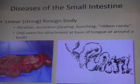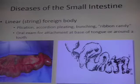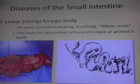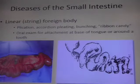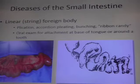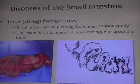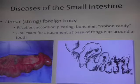Linear foreign body: any time you see the bowel loops that are plicated — pleating, bunching, ribbon candy — all those kinds of descriptions, it is a linear foreign body. Specifically, that means it is attached. The string is usually attached proximally, and the bowel loops continue to move; peristalsis climbs on the string because it's trying to get rid of it, but it can't because it is attached proximally.